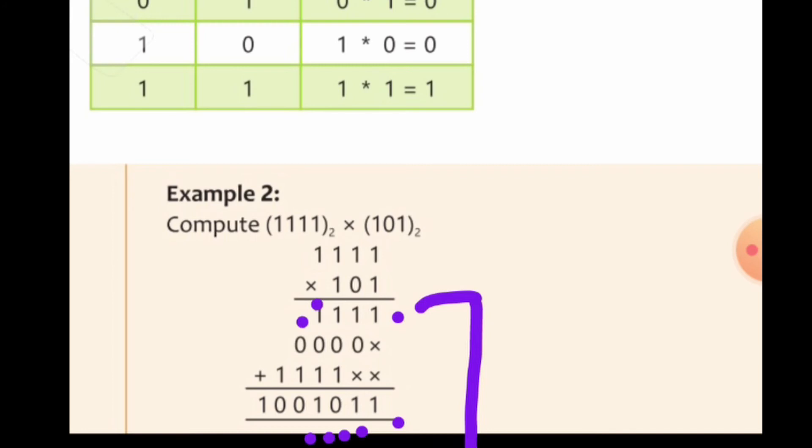Then 1 plus 1 is 0 and then one more carry. 1 plus 1 is 0 and then we get the carry here as 1.